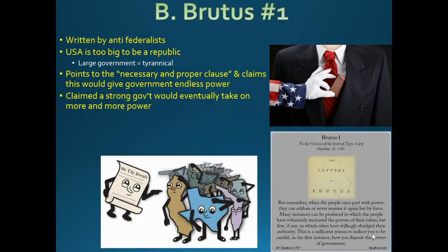Brutus 1 is a required document for this class. It was written by Anti-Federalists — kind of an answer to Federalist 10. It said the United States is too big to be a republic — anti-federalists claimed that historically the only successful republics were small, like small towns.